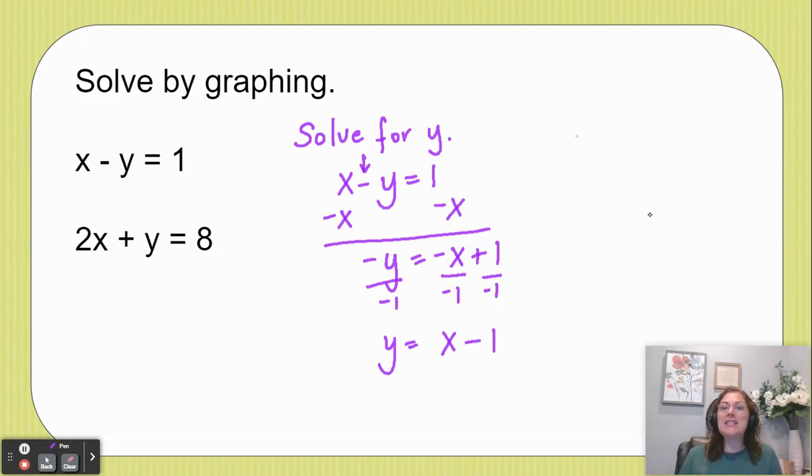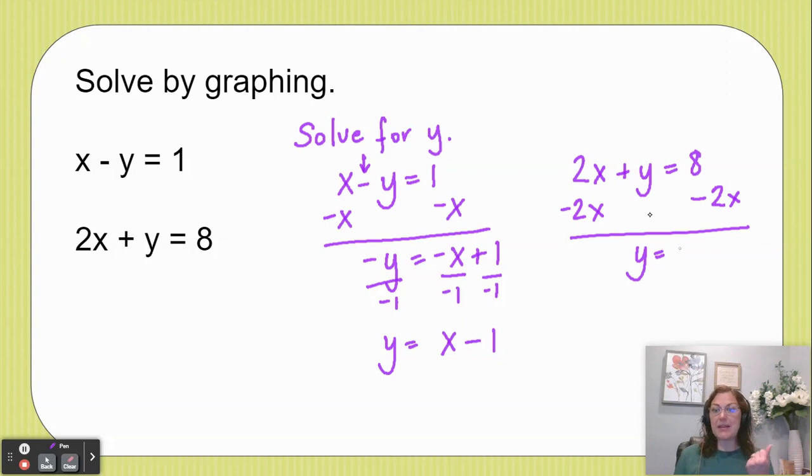Let's do the same for the second equation. I want to get y all by itself, so I'm going to move this 2x by subtracting it. And that leaves me with y equals - remember, I'm going to flip-flop it to negative 2x plus 8.